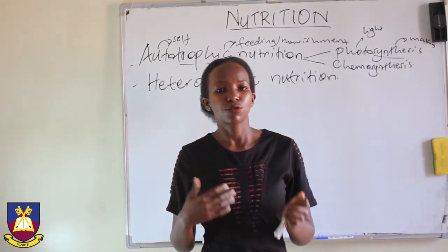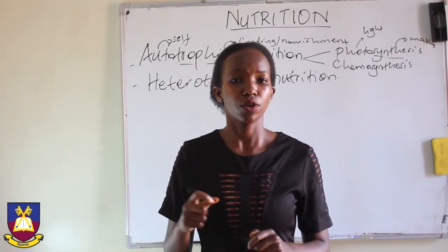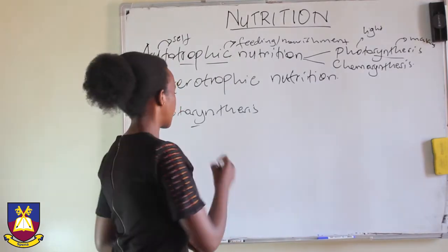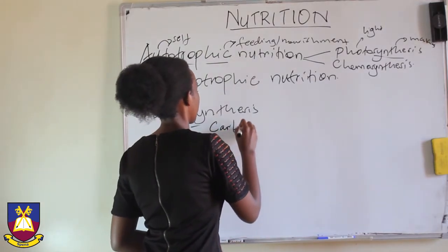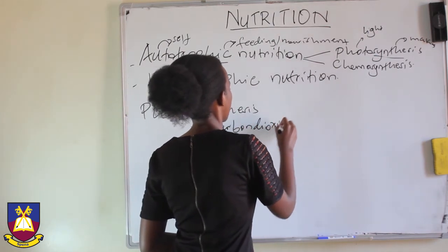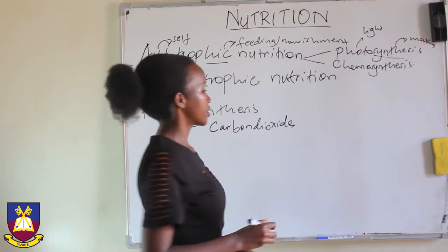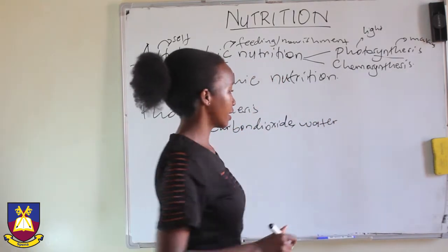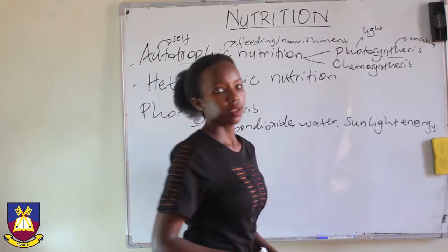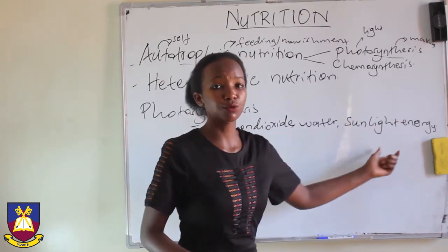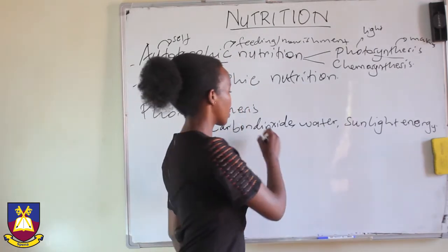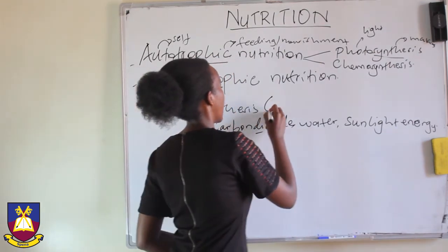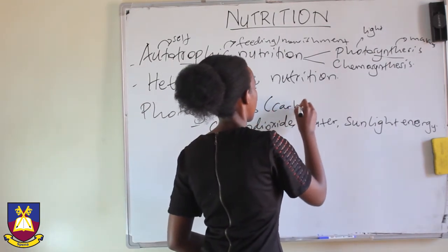Photosynthesis refers to the form of autotrophic nutrition where organisms make their own food using carbon dioxide, water, and sunlight energy. Without the energy from sunlight, it is impossible for these organisms to make their own food, and this food is always a carbohydrate.